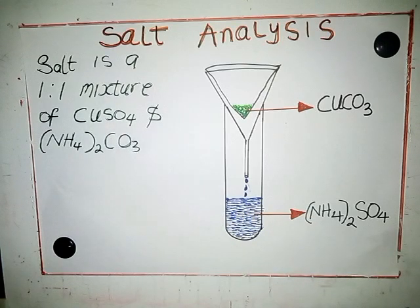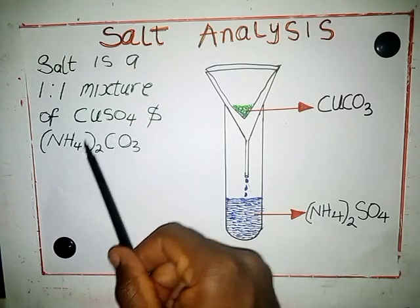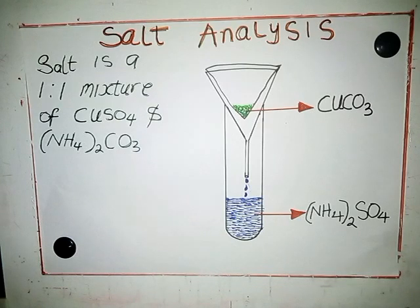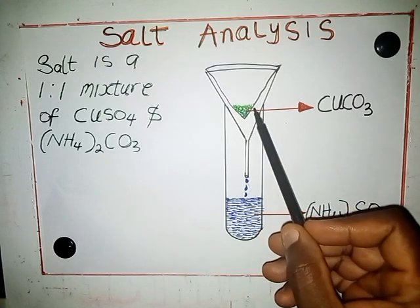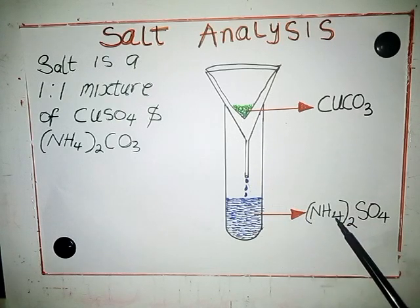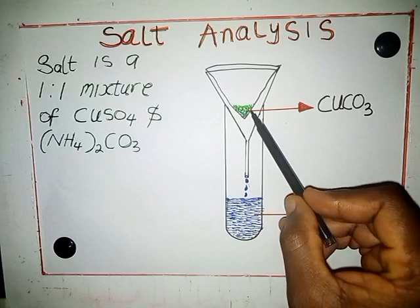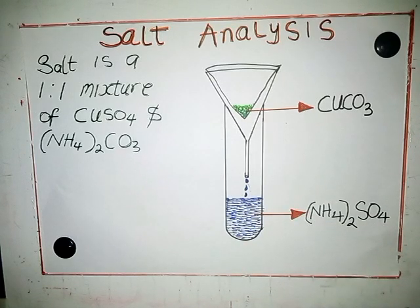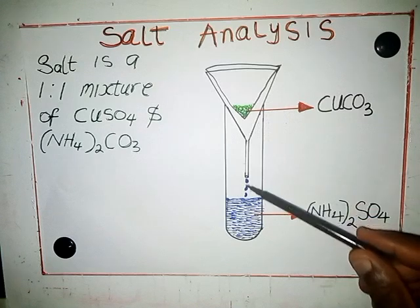When these two compounds react, it's a double decomposition reaction — simply the anions of one get exchanged with the other. When that happens, copper carbonate is formed, which is light green in color, and the filtrate is going to be blue, which is the ammonium sulfate. Remember, the residue is what is left in the filter paper, while the filtrate is what passes through the filter paper.